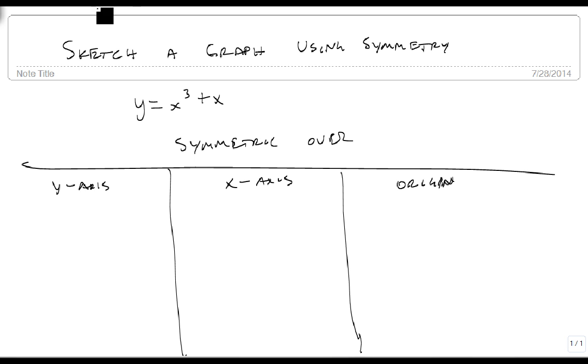So the y-axis, we change the sign of our x's, and we know that raising a negative number to an odd power keeps it negative, so this simply becomes minus x cubed minus x, which is false, that's not exactly the same.